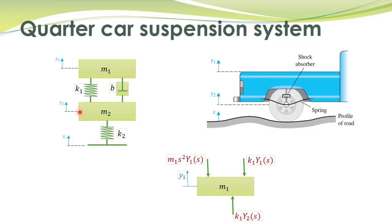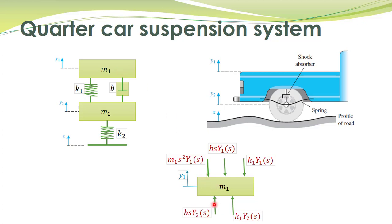The spring force is proportional to displacement y2 with proportionality constant K1. Similarly, the damper force due to M2's motion is proportional to velocity of that end, which in the Laplace domain is position multiplied by s. The upward damper force when M2 moves is shown accordingly. This completes the free body diagram corresponding to displacement y1.